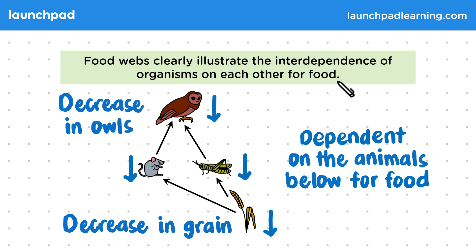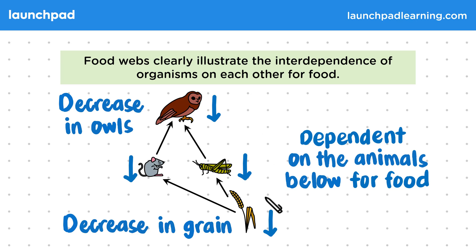It's important to take into account the direction of the food chain. Here we're saying that a decrease in the amount of grain eventually leads to a decrease in the local owl population. We're not saying that the decreasing number of owls causes a decrease in the amount of grain.